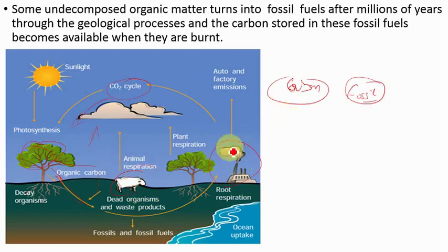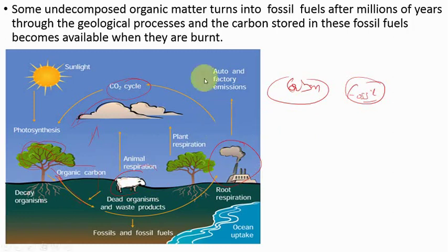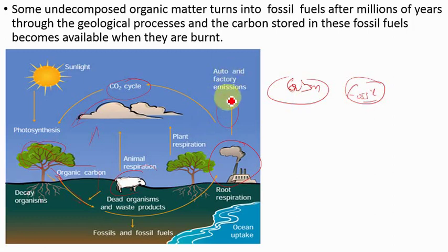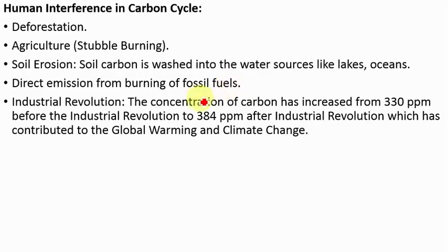You can also see that fossil fuels are being burned, and the carbon stored in them is released. This is the carbon cycle — it goes on and on. The carbon released into the atmosphere is again utilized by plants for photosynthesis, completing the cycle.